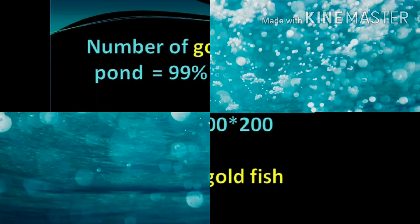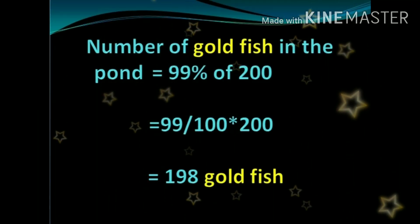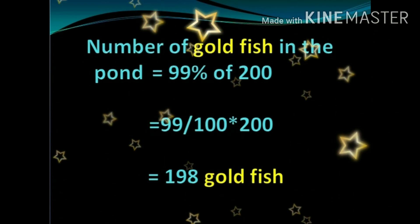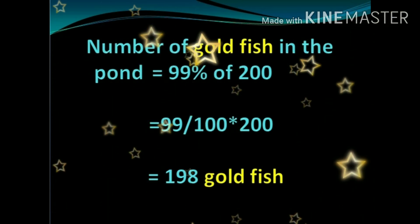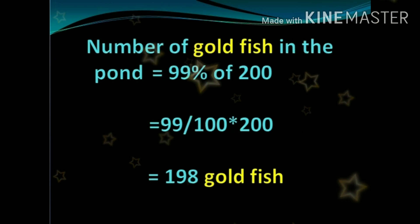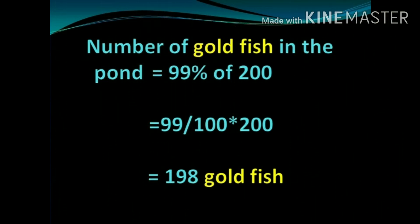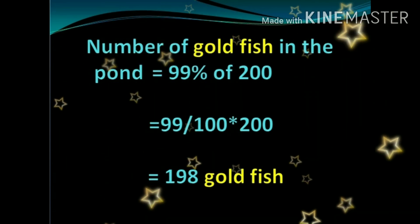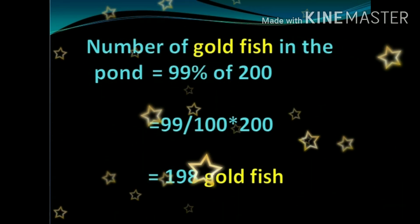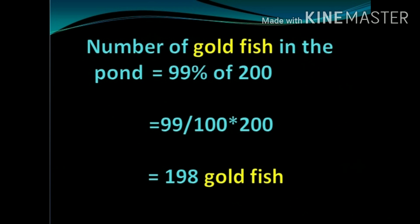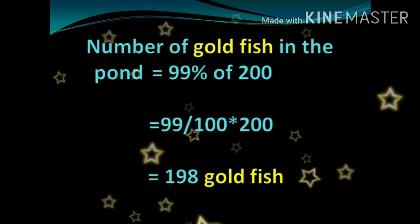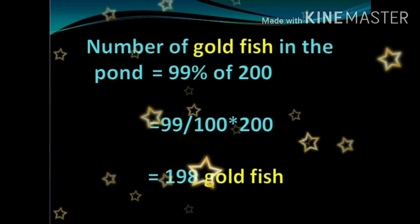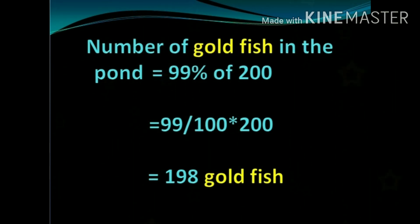Dear learners, probably you would have tried and got different answers. Now let's see the actual solution. The number of goldfish in the pond is 99% of 200, that is equal to 99/100 × 200, which equals 198 goldfish. So there are 198 goldfish in the pond, and the remaining 2 are not goldfish.